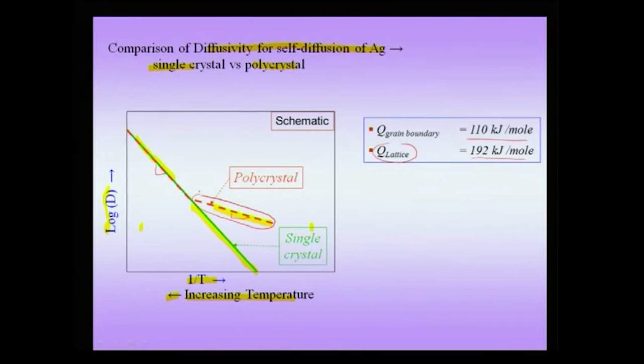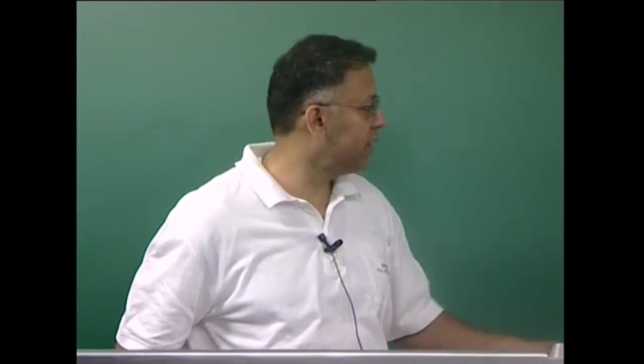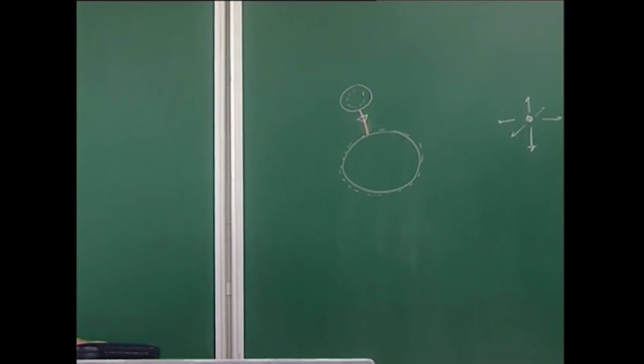This important experiment shows that at high temperatures, lattice diffusion dominates despite the grain boundary having lower activation energy, because the available cross-sectional area through the lattice is much larger. At low temperatures, when the system does not have sufficient activation energy for lattice diffusion, grain boundary and other short-circuit mechanisms take over and can play an important role in processes such as precipitate coarsening in polycrystals.